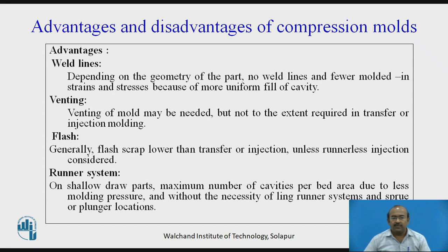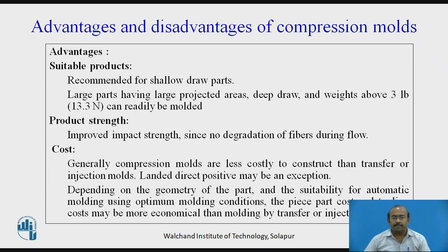Flash scrap is generally lower than transfer or injection unless runner-less injection is considered. Runner system: for shallow draw parts, maximum number of cavities per bed area due to less molding pressure and without the need for a runner system, sprue, or plunger location. Suitable products: recommended for shallow draw parts. Product strength: improved impact strength since there is no degradation of fiber during flow. Cost: compression molds are generally less costly to construct than transfer or injection molds; landed directly positive may be an exception.